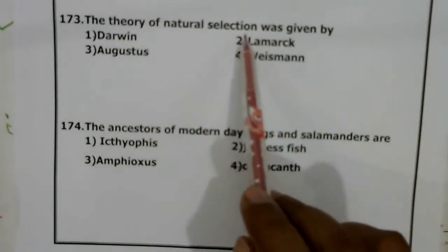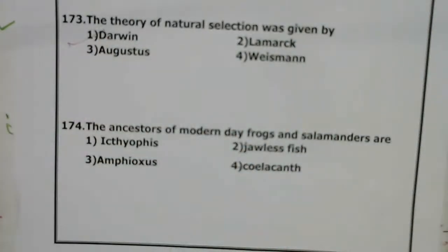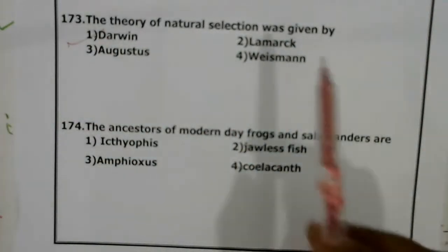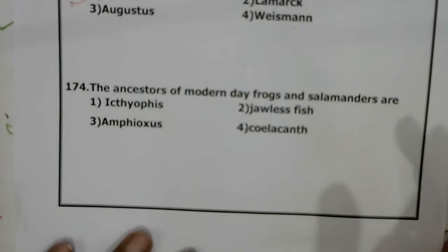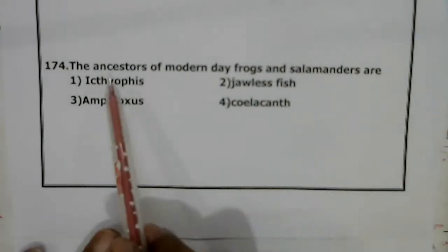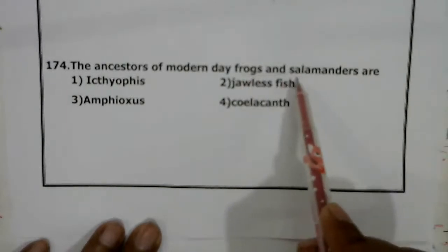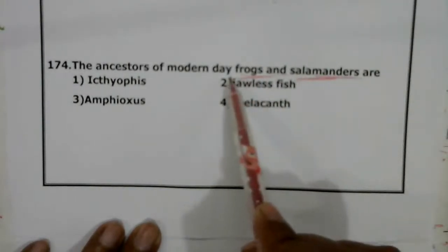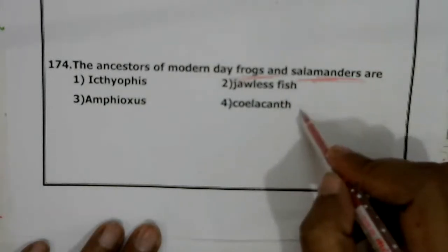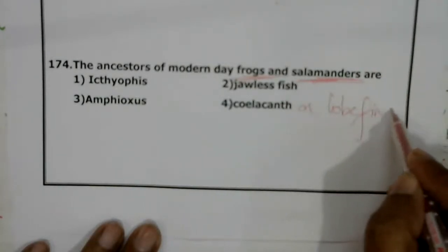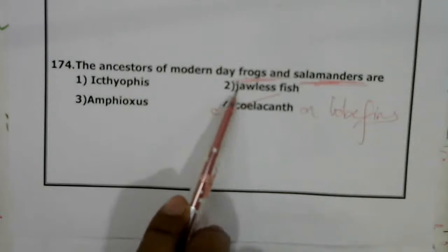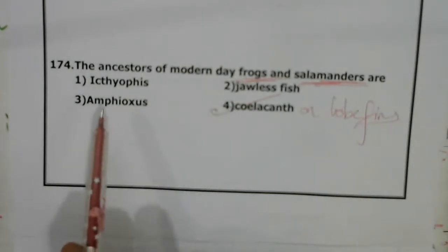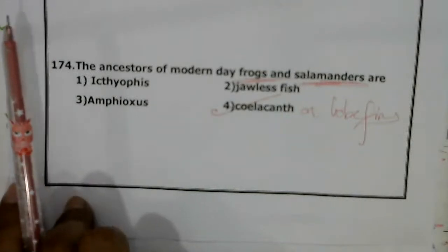The theory of natural selection was given by Darwin. Lamarck gave the theory of inheritance of acquired characters. Question 174: The ancestors of modern-day frogs had a common ancestor with salamanders — that ancestor is lobe-finned fish, also called crossopterygians. Correct answer is 4.